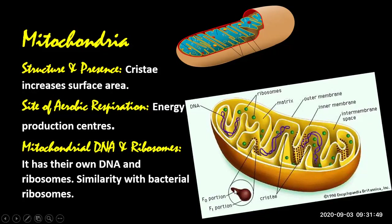Mitochondria is the site of aerobic respiration. You know respiration in a single equation where glucose reacts with oxygen and converts into carbon dioxide and water, and energy is released. But aerobic respiration is not that easy — there are a series of reactions we will study in the seventh chapter, including glycolysis, the Krebs cycle, and the electron transport chain.